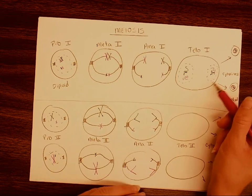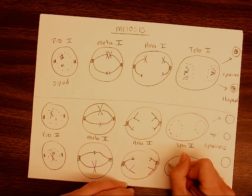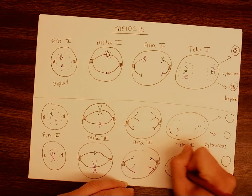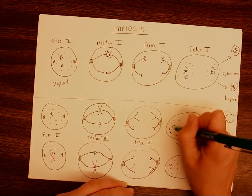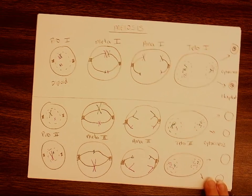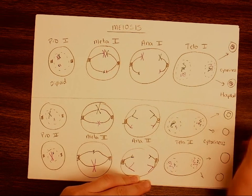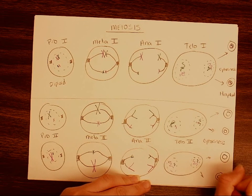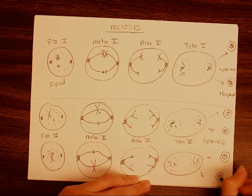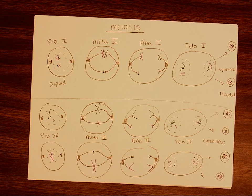Telophase II is going to look identical to telophase I — our nucleus is going to reform on opposite sides of the cell, and those chromatids are going to relax and turn into chromatin. Then our process of cytokinesis divides the cytoplasm, giving us our four unique haploid cells with fully formed nuclei and chromatin inside. And that's going to be our process of making sperm or egg cells.